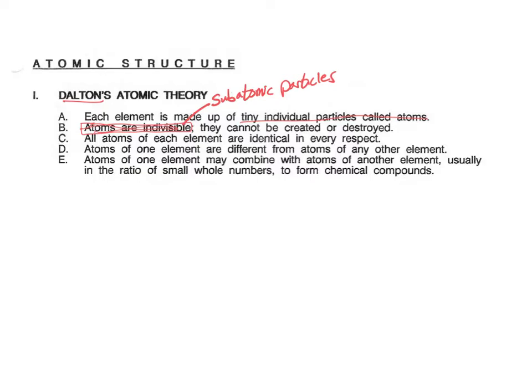In that theory, we were also told that the atoms cannot be created or destroyed. And that is correct, except in nuclear reactors and in the sun, or stars. In his theory, he said that all of the atoms are identical in every respect. We now know that that is not exactly true, and we'll discuss that in a moment. The atoms of one element are different from the atoms of any other element. Each element has something that makes it different from the others. And we know that the atoms of one element may combine with the atoms of another element in small whole number ratios to form new chemical compounds.